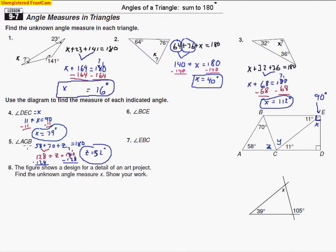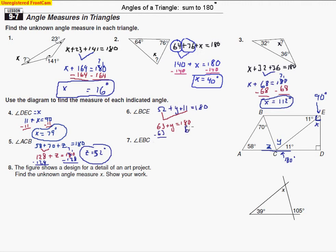Now we can go back to number 6 and find angle BCE, which we'll call Y. Notice that angle ACB (which is 52°), Y, and 11 degrees all make a straight line, so they add to 180 degrees. So 52 plus Y plus 11 equals 180. Combining the 52 and 11 gives 63 plus Y equals 180. Subtracting 63 from both sides — borrowing, changing the 8 to a 7 — gives us 117 degrees.